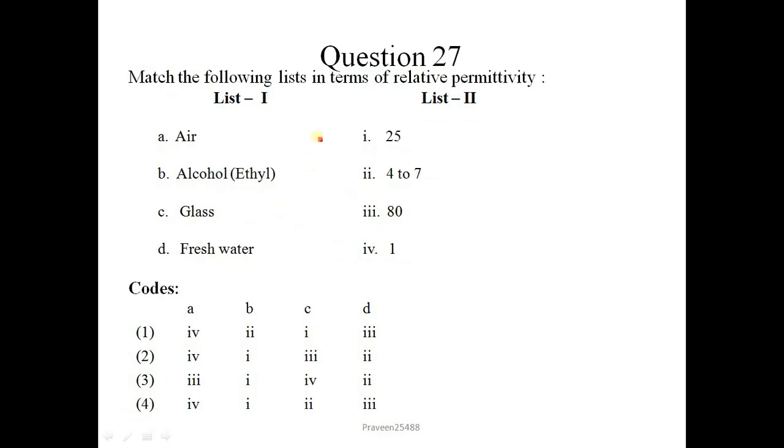Match the following list in terms of relative permittivity. So we have to match list 1 with list 2. For air, relative permittivity is 1. For alcohol, it is 25. For glass, it varies between 4 to 7. And for fresh water, it is 80. So correct option is 4, 1, 2, 3.